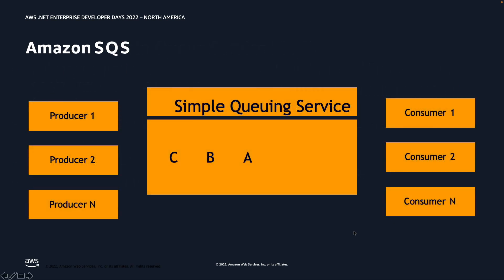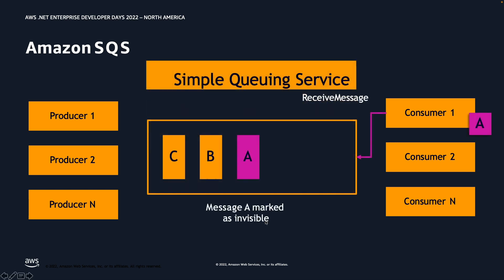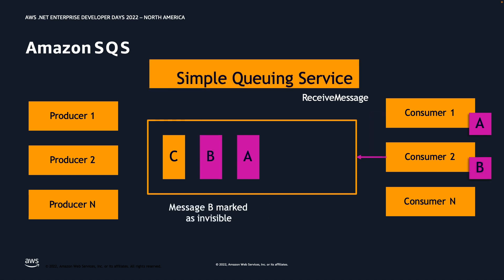Let's look at what an Amazon SQS architecture looks like. On the left-hand side, we have producers — multiple instances of an order service. In the middle, we have the Simple Queuing Service with three messages: A, B, and C. On the right, we have consumers — you can have any number. Consumer one calls receive message and gets message A, which is then marked as invisible. Consumer two calls receive message and gets message B.